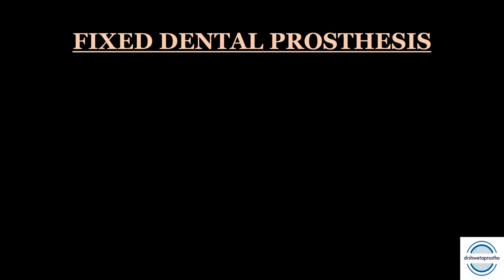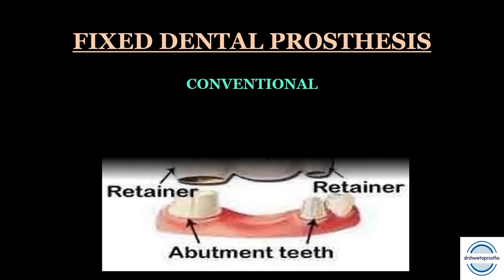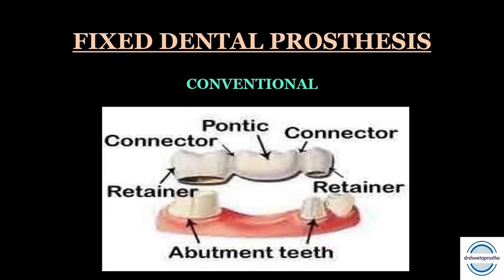First of all, what is a fixed dental prosthesis? Fixed dental prostheses are used to replace missing or damaged teeth. They are called fixed because they cannot be removed by the patient. The conventional or traditional fixed dental prosthesis has three main parts: the retainer, which is the crown seated onto the abutment; the pontic, which replaces the missing tooth; and the connector, which connects the retainer to the pontic.